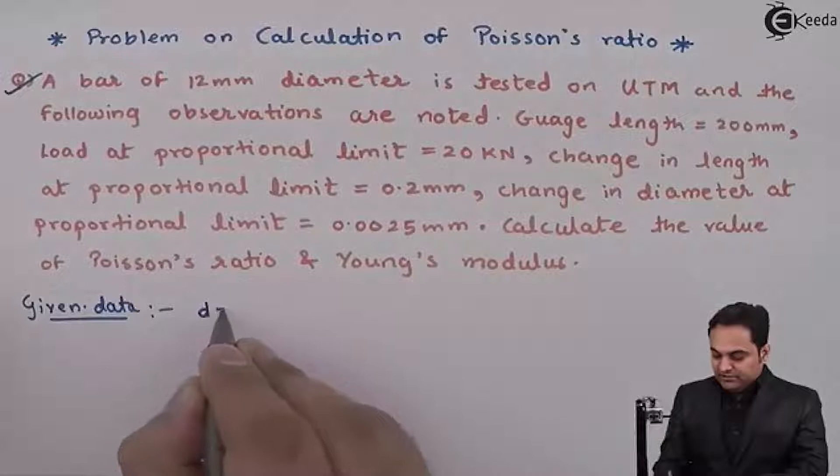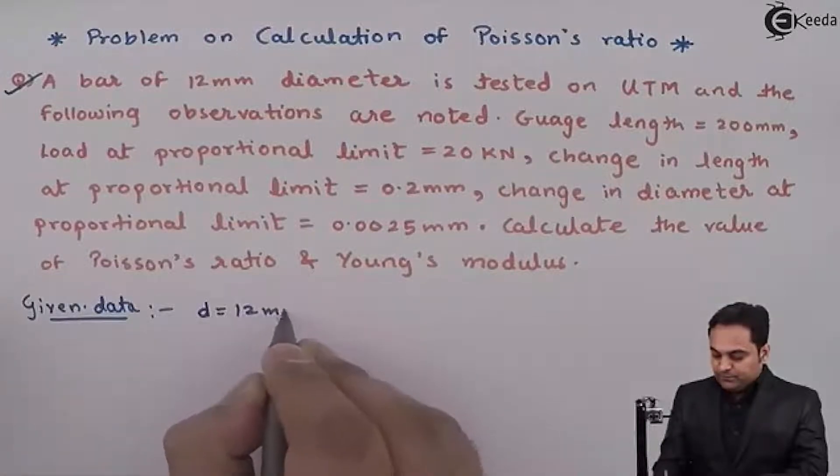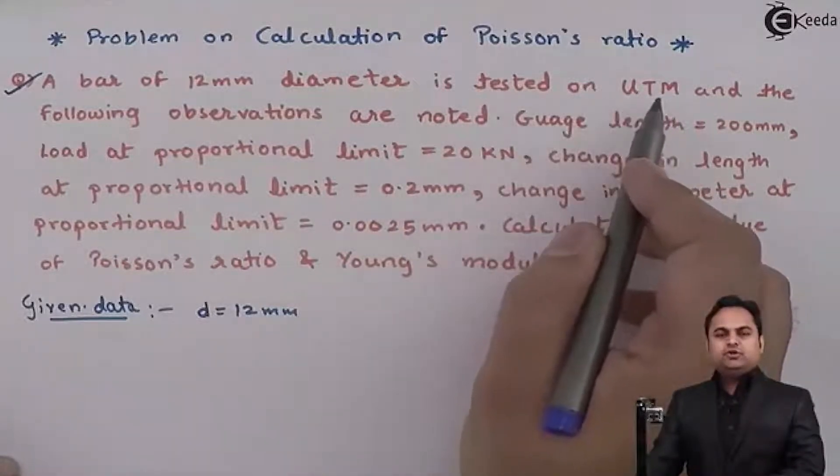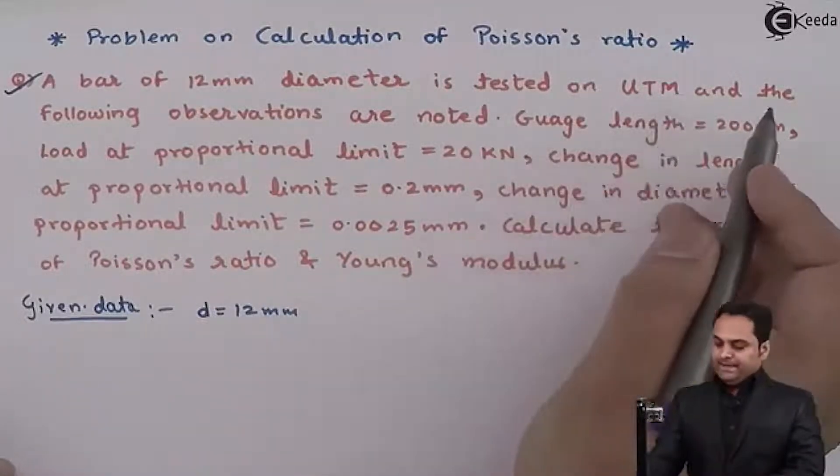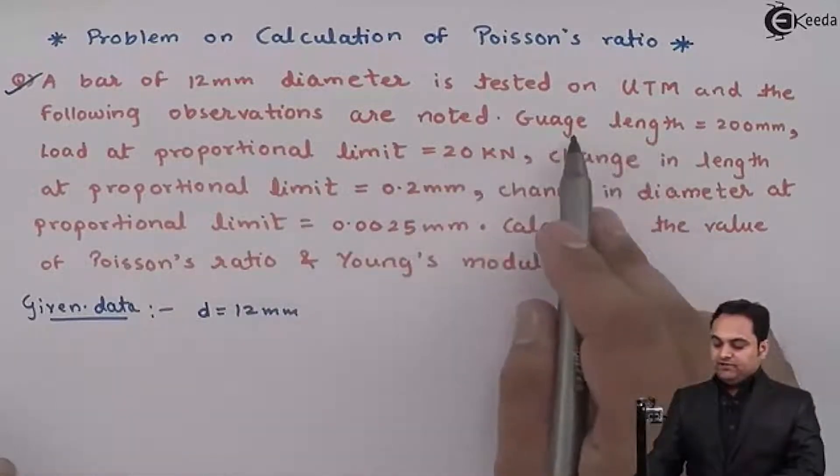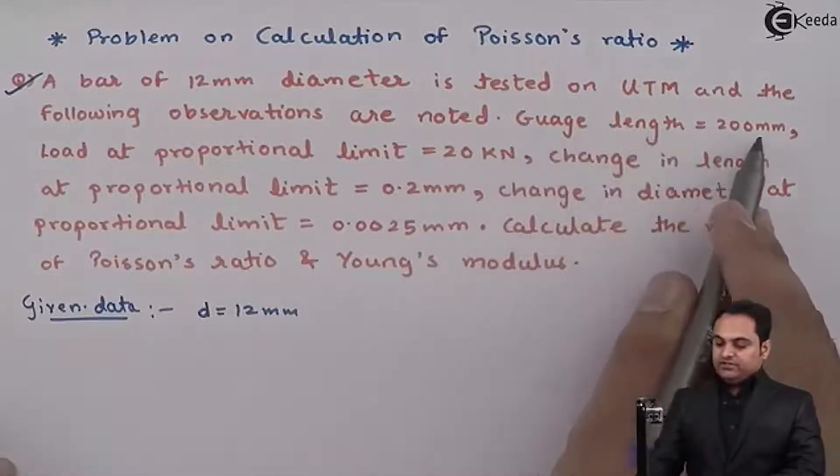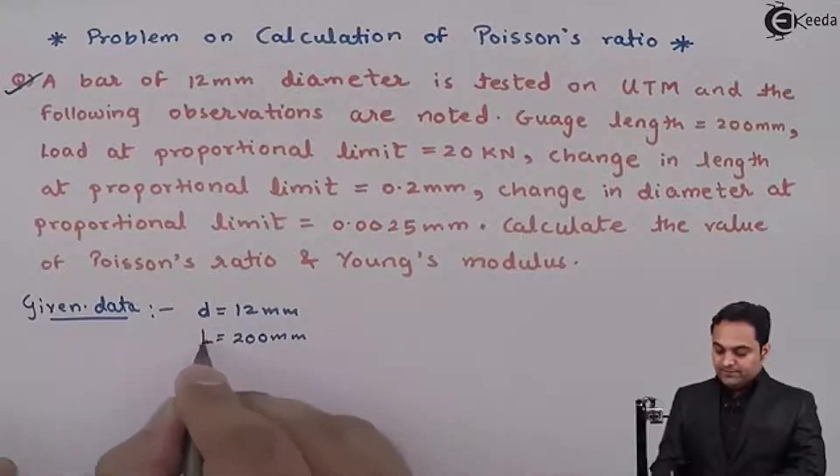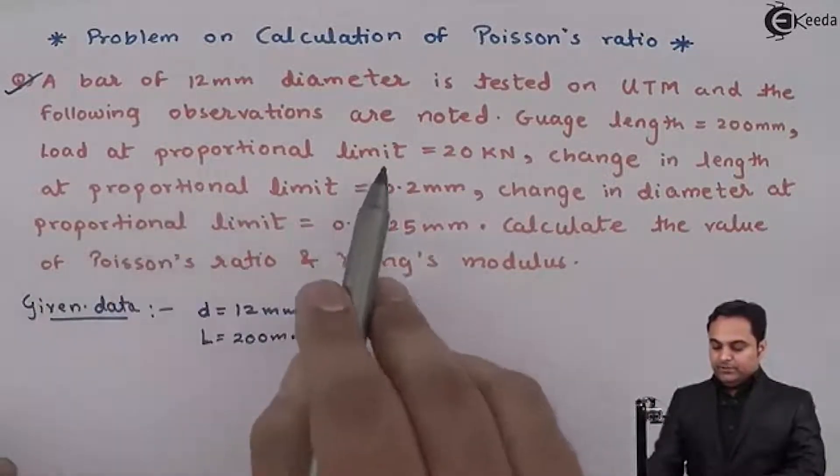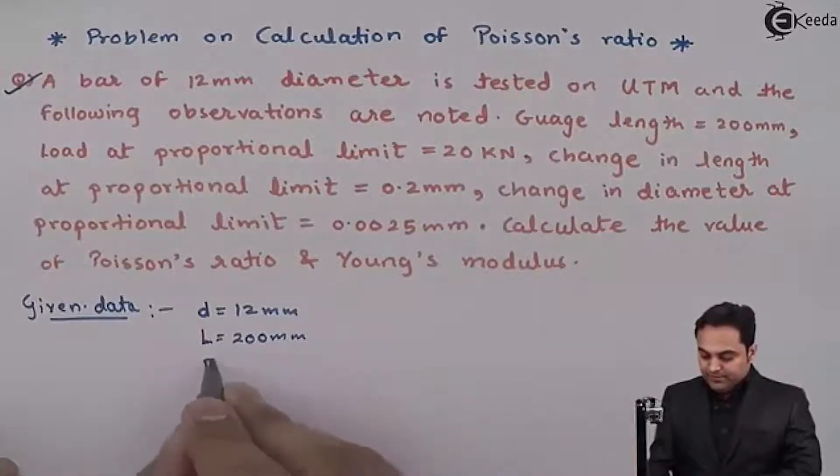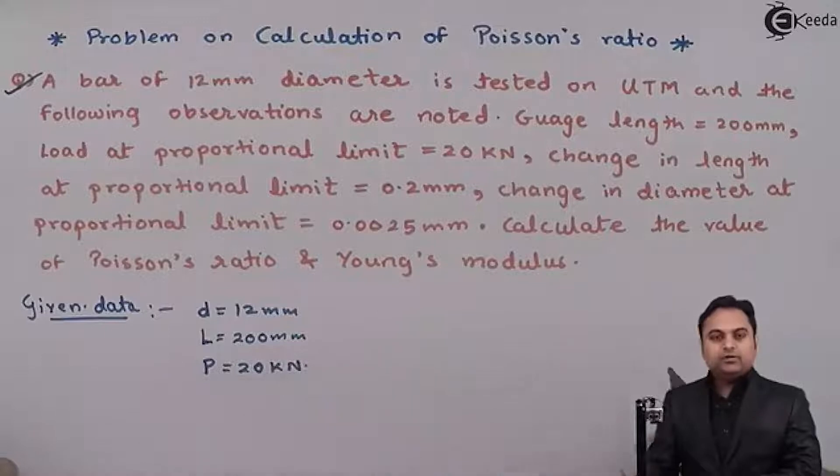Let diameter be denoted by small d. A 12 mm diameter bar is tested on UTM, which is Universal Testing Machine, and the following observations are noted. First, gauge length is 200 mm, which is the original length of the bar. Load at proportional limit is P equals 20 kN.